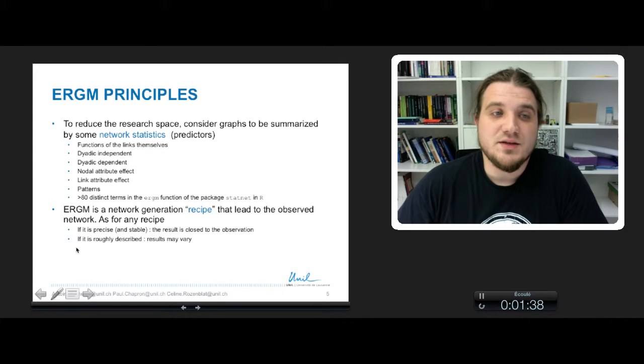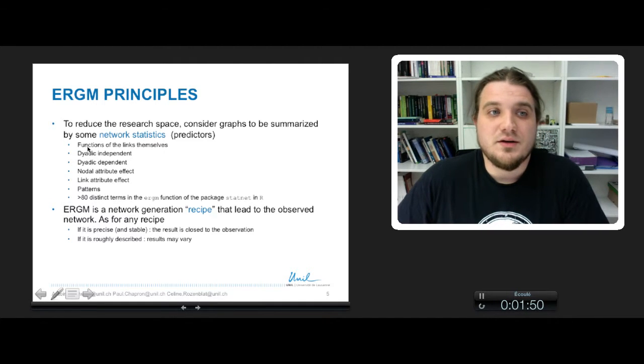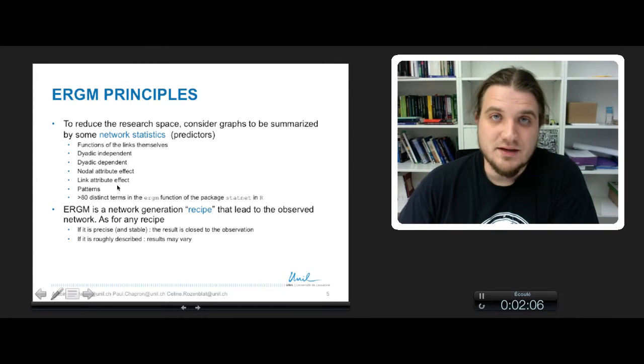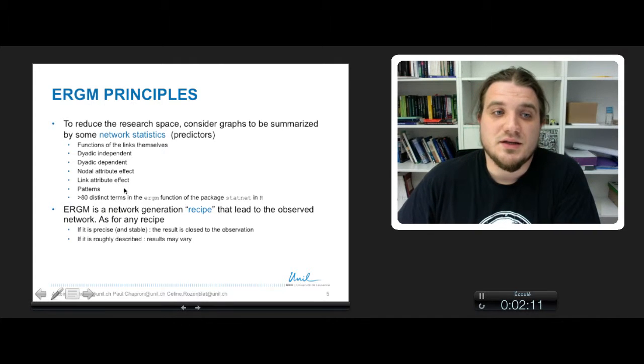So ERGM models decide to reduce this research space and consider graphs to be summarized by some network statistics that are the predictors of its structure. These statistics are of various kinds. There are functions of the links themselves. Sometimes they are dyadic independent or dyadic dependent. Some of them are nodal attribute effects. Some of them are link attribute effects. They consider some patterns like stars, cycles, paths, and so on. In fact, there is a lot of different terms to be included in ERGM models.